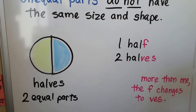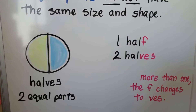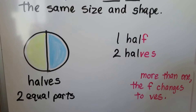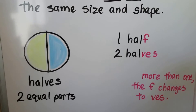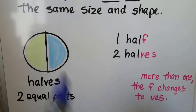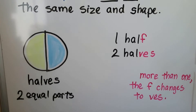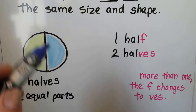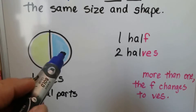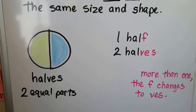Here we have a circle and it's in halves. There are two equal parts. The yellow part is equal to the blue part. It's like a line of symmetry — we could fold this over and they would be the same size and shape.